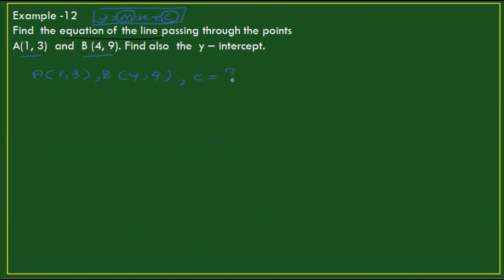Now we will see the slope for the next example. The slope formula is m equals y2 minus y1 divided by x2 minus x1.